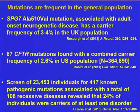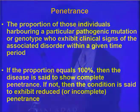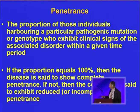If this proportion is 100%, then the disease shows complete penetrance — every individual with the mutation shows the clinical phenotype. But in many cases that is simply not the case, and many individuals with a given mutation do not, or have not yet, exhibited the clinical phenotype. These individuals are said to exhibit reduced, incomplete, or variable penetrance.